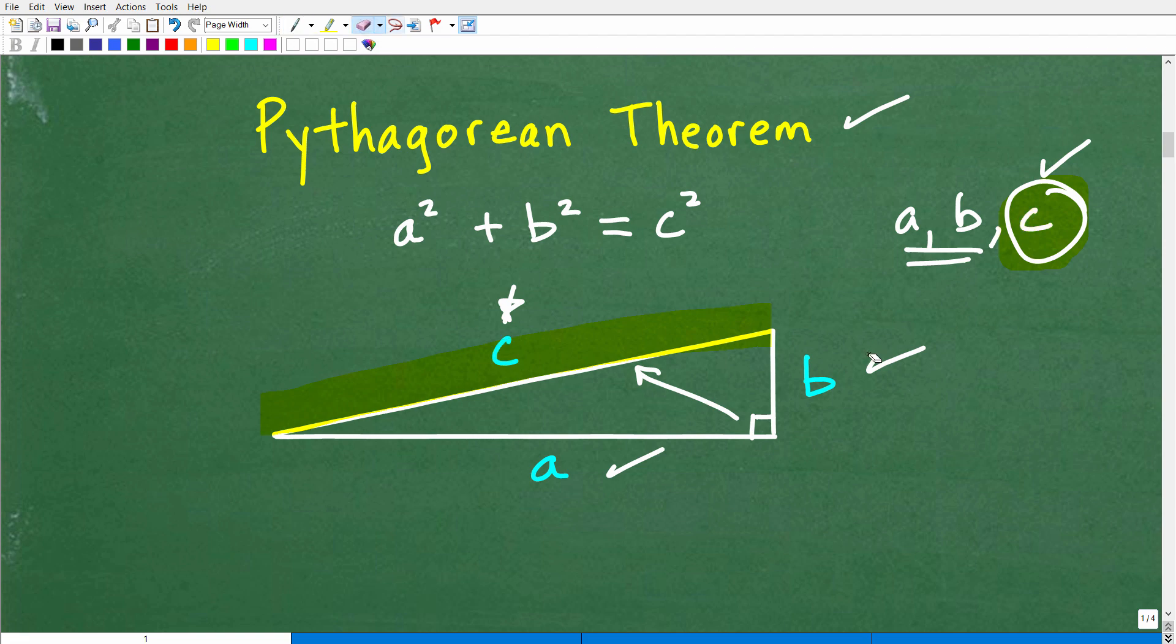So once you understand that, then basically the Pythagorean theorem has this obvious relationship, and that is this. If we square this side, this middle side right here, A squared,